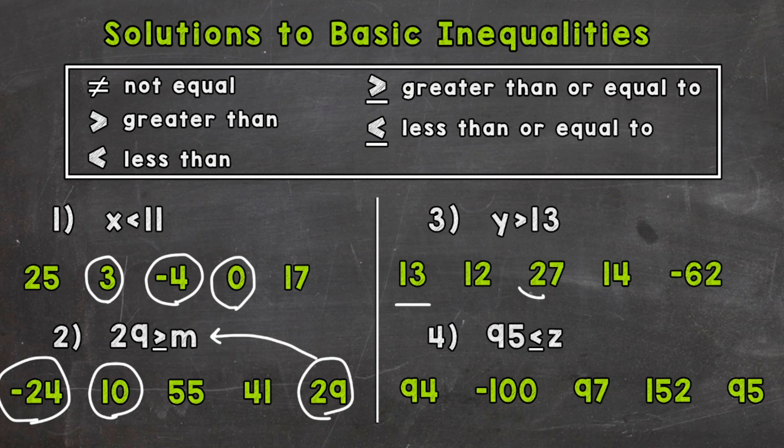So 27 would work. 14 would work. Negative 62 is less than 13. So negative 62 would not work, as well as 13 and 12 there. So correct solutions: 27, 14, and then any other number that's greater than 13.